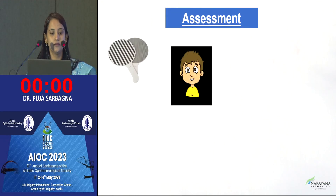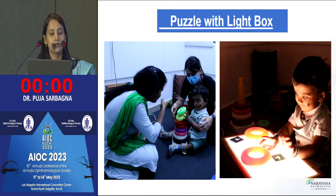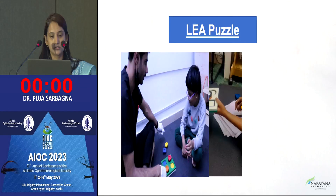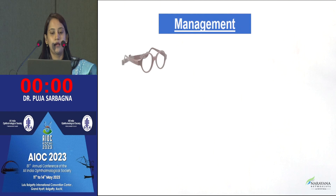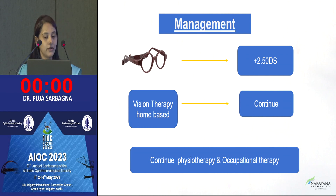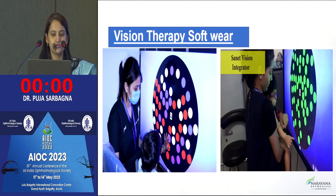After six to eight months of vision therapy, the Lea Paddle showed improvement to 1.0 CPCM, social interaction developed, eye contact was good, Hiding Heidi showed 25% contrast sensitivity, and the child started responding to all gazes on the visual field test. We then introduced puzzle exercises on the light box, continued glasses and vision therapy, shifted to home-based management, and advised physical and occupational therapy. We also introduced vision therapy software called Anus Visual Integrator, training the child to use it independently.